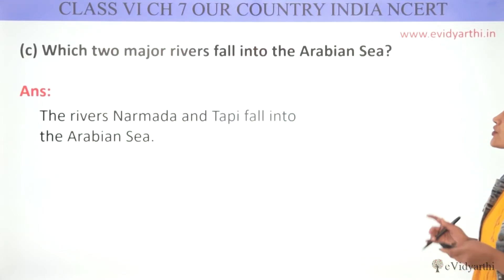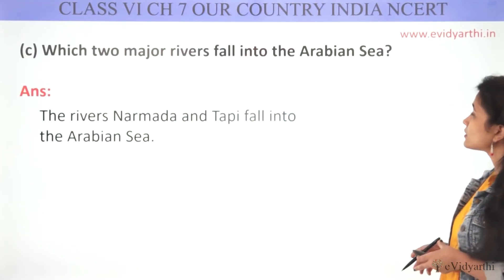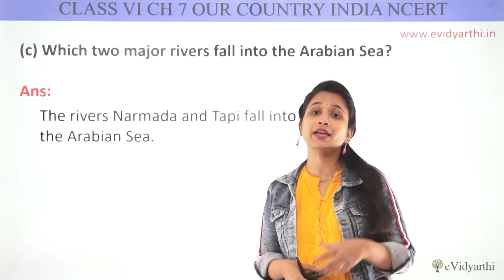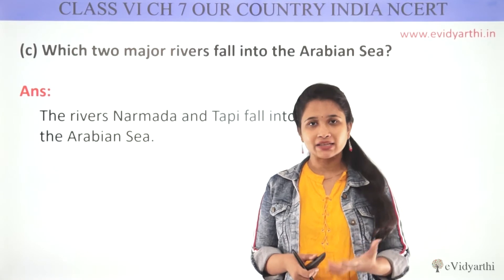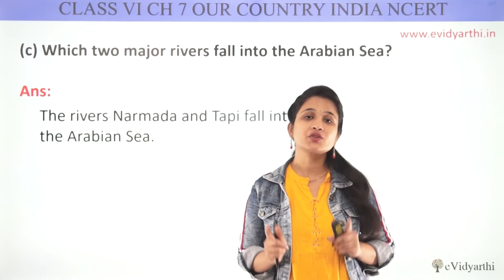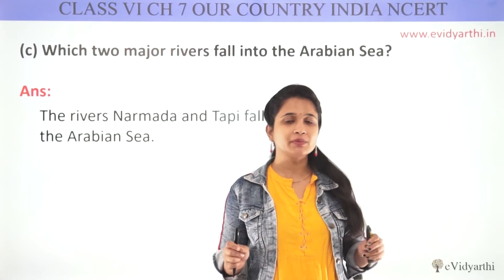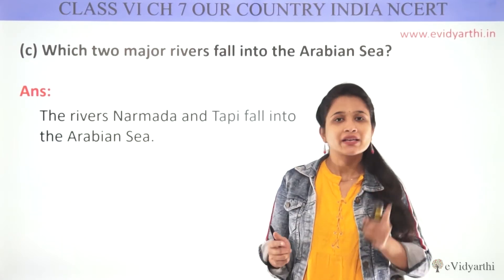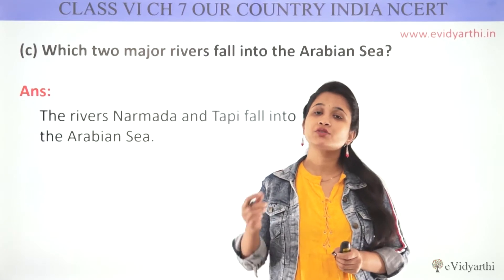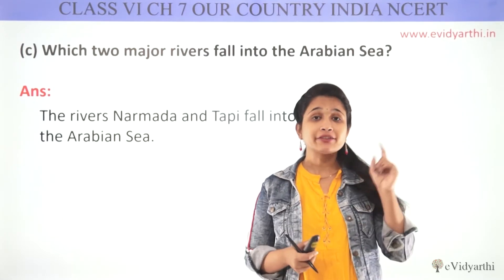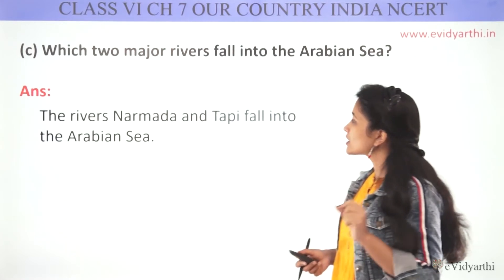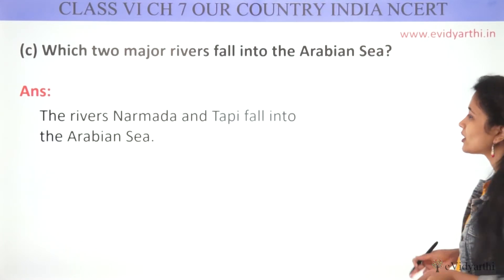Question C: which two major rivers flow into the Arabian Sea? Two major rivers drain into the Arabian Sea. The first one is Narmada and the second one is Tapi. These are the west-flowing rivers. The other rivers in India are east-flowing rivers, which flow into the Bay of Bengal.